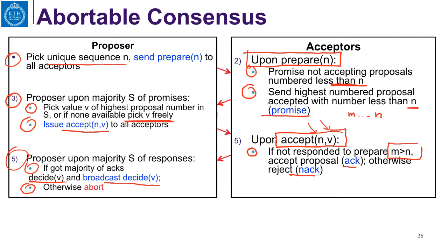Let us note some remarks. When we send prepare n to an acceptor, if that acceptor has already promised with a higher number to some other proposal, it simply ignores this prepare message — nothing will go wrong. It may also send a negative acknowledgement saying this proposal has no effect and a higher number is needed.